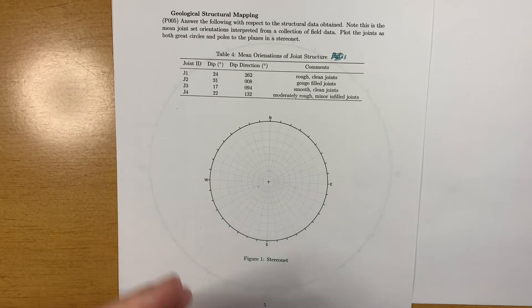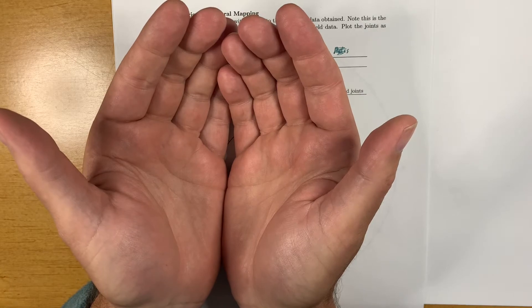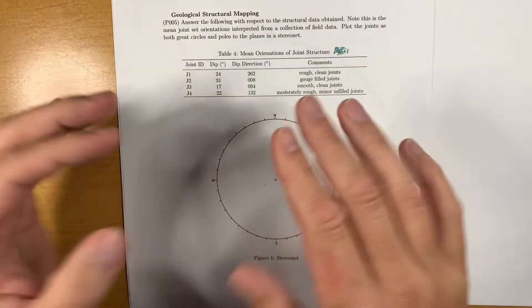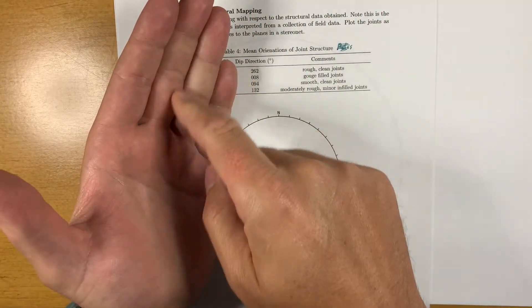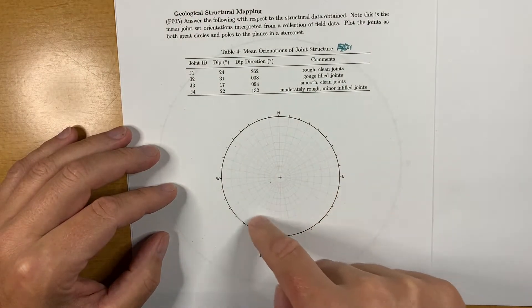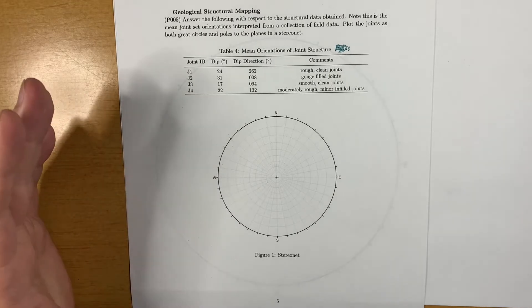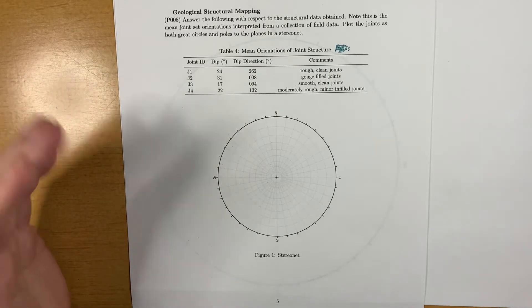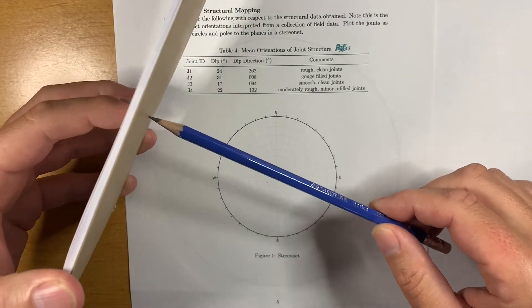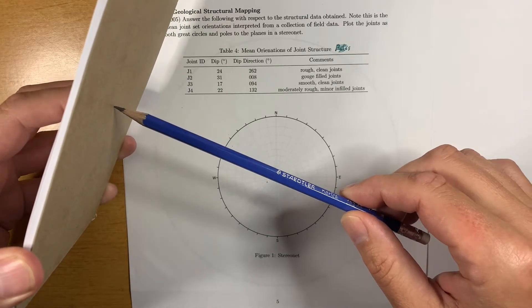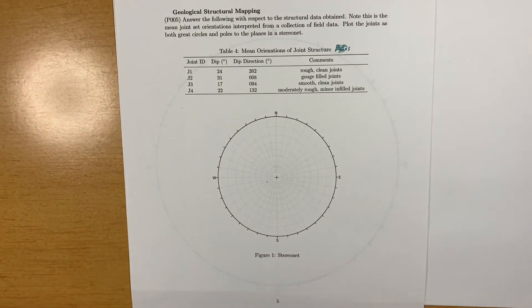If you recall briefly, the stereonet is a way of visualizing a lower hemisphere of a sphere in two dimensions. Essentially, the planes intersect the bottom of the lower hemisphere, and in 2D they are projected as a great circle. The pole of the plane is the normal to the plane. We have a great circle for the plane itself, and where that normal intersects the bottom of the lower hemisphere projection, we have a point, and that point is known as the pole.